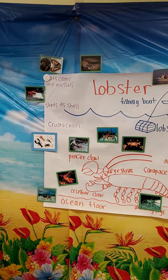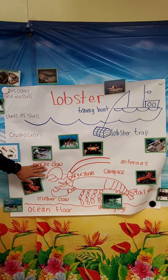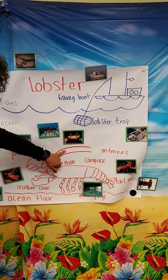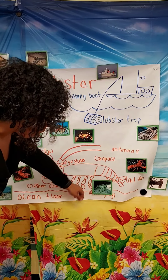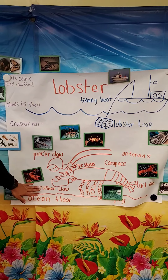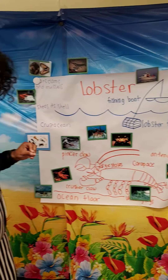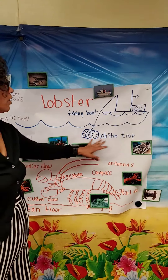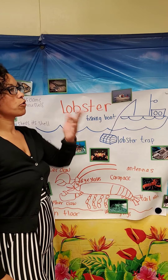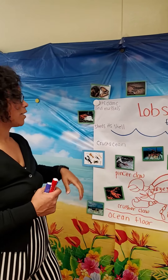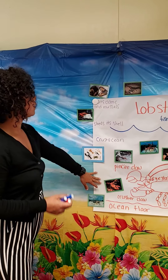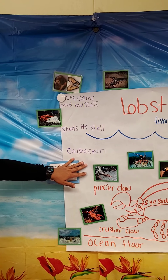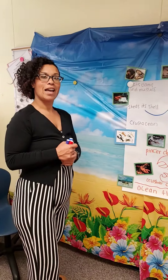So this is the lobster. The lobster has many parts: a pincher claw, eye stalks, a carapace which is its back shell, antennas, walking legs — and they walk backwards — and a crusher claw and pincher claw. They live on the ocean floor, and fishermen fish for lobsters with a lobster trap to sell them to grocery stores or restaurants. Lobsters eat clams and mussels, they shed their shells, and they are a crustacean. Thank you for joining us today and have a great day!